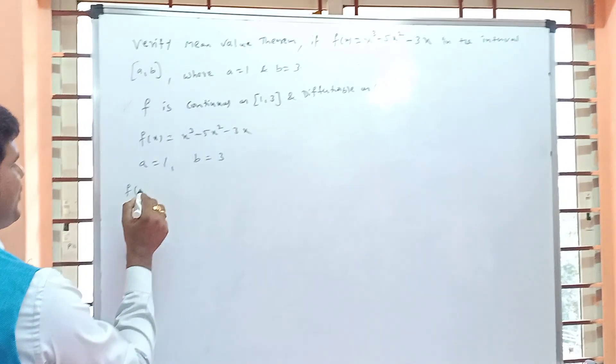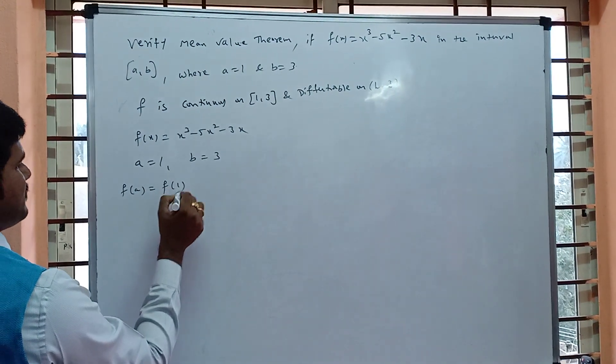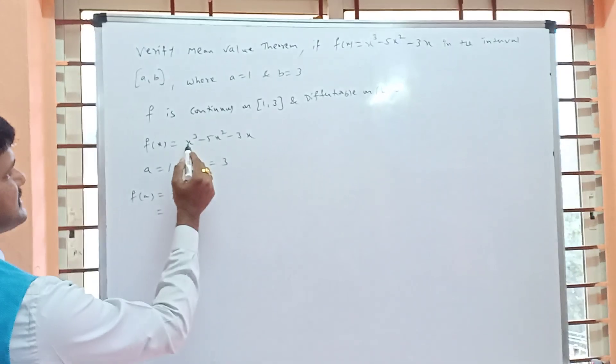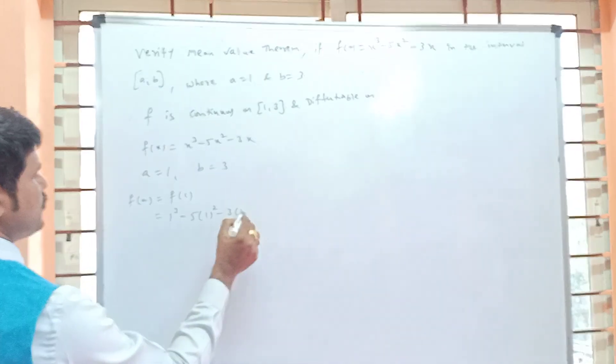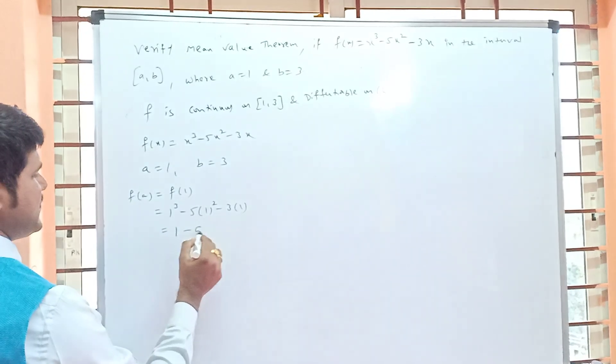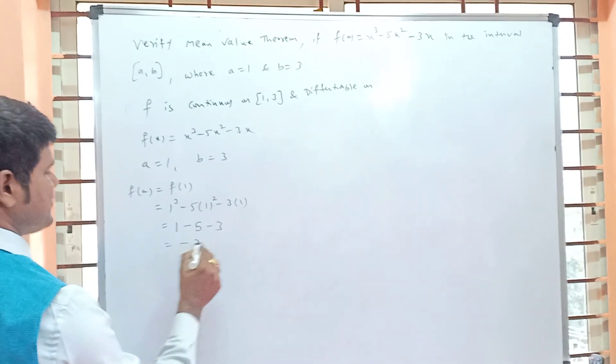Then f(a), that means f(1). In place of x in f(x) substitute 1: 1³ - 5(1)² - 3(1) = 1 - 5 - 3, you will get -7.